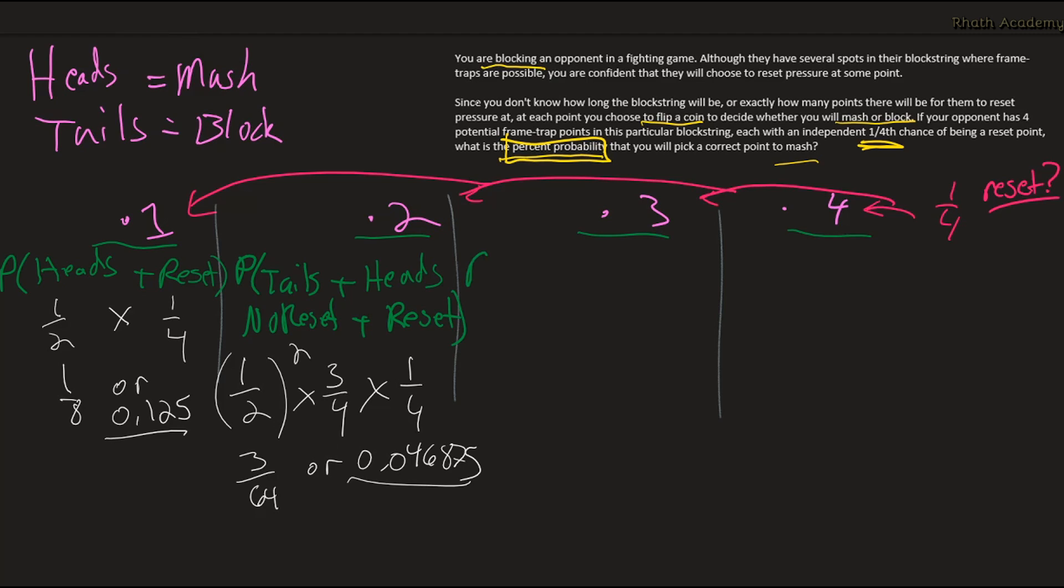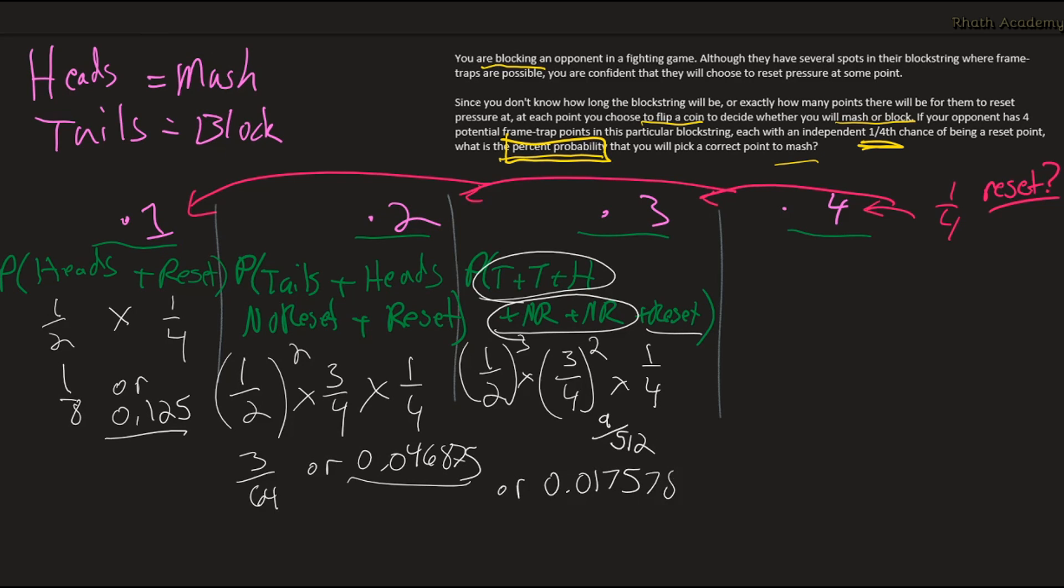What about the third point? Well, it's going to be the probability that we get tails on all of the previous points. So that's tails on the first point, tails on the second point, and then we want heads on the third point. And as for the resets, we want no reset on the first point, no reset on the second point, and then we do want a reset on the third point. And since we have 3 coin flips here, we can just write that as 1/2 to the third. Since we have 2 no resets, we can just write that as 3/4ths squared, and we have 1 reset, which is just going to be 1/4th again. Multiply those all together, and we get 9 over 512.